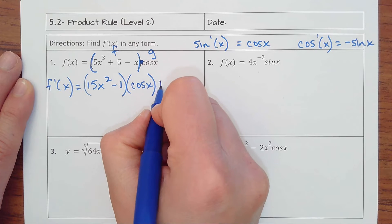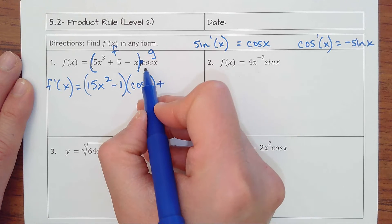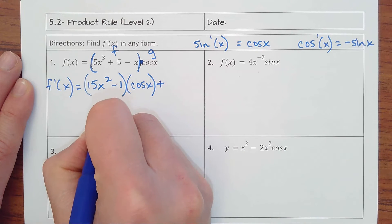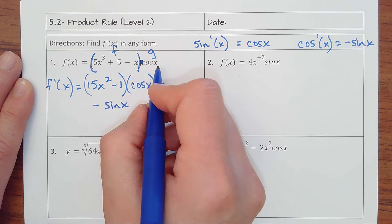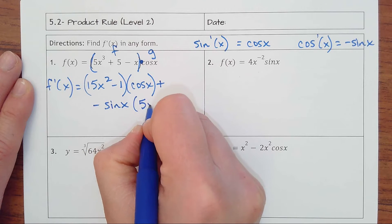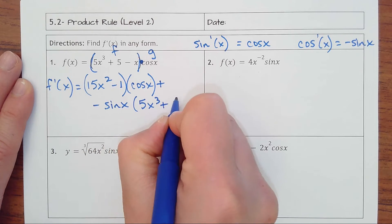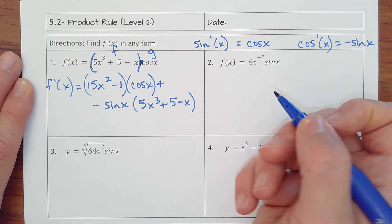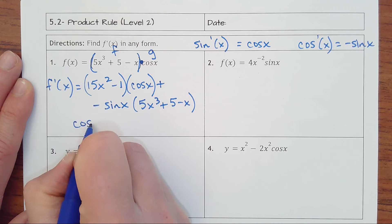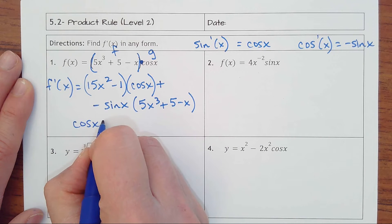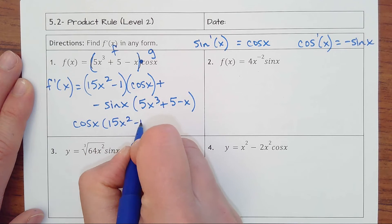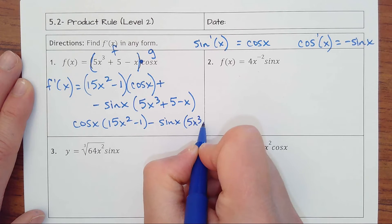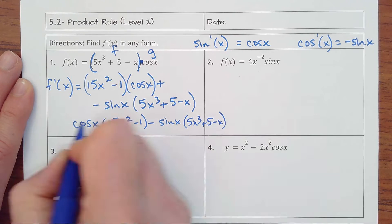And then remember it's plus, and then it's going to be taking the derivative of g, derivative of cosine is negative sine of x, and then times the normal f function, 5x cubed plus 5 minus x. And again, I would probably just leave it like that. You could pull the cosine in front, but that doesn't really make it any better.